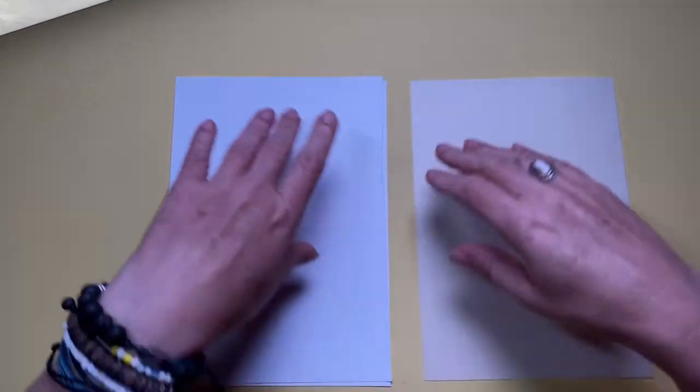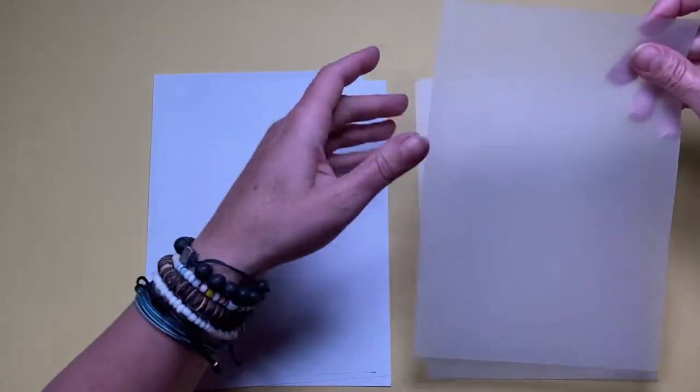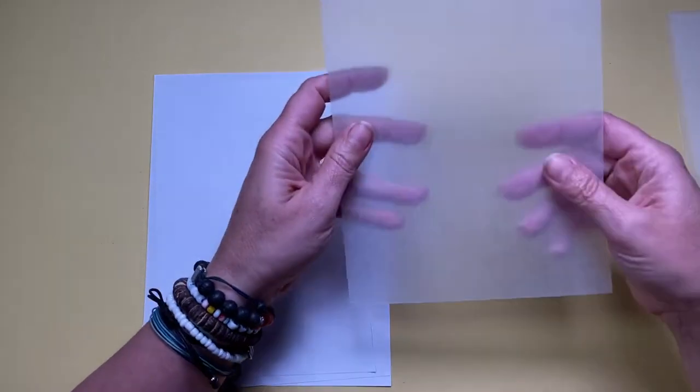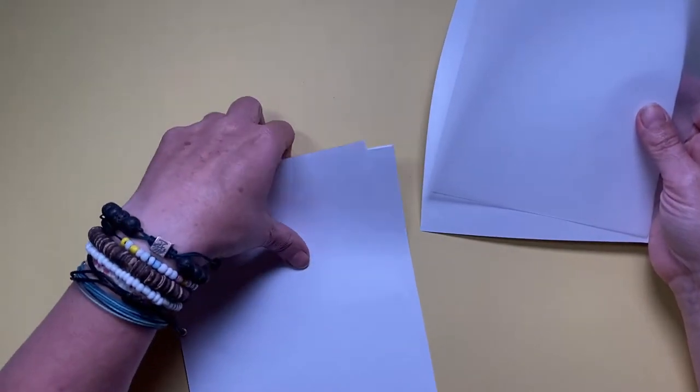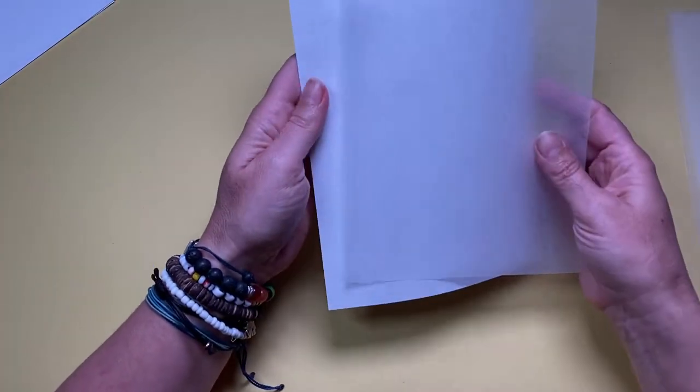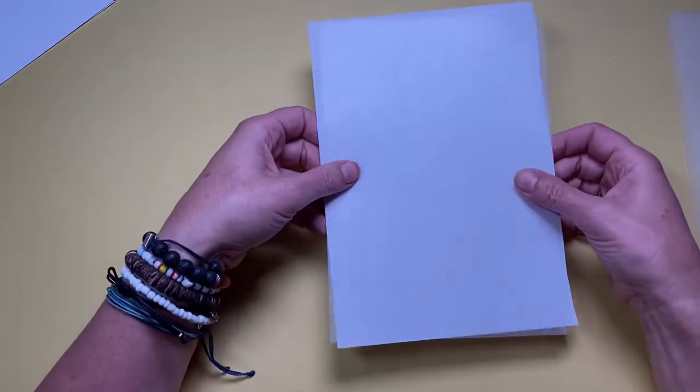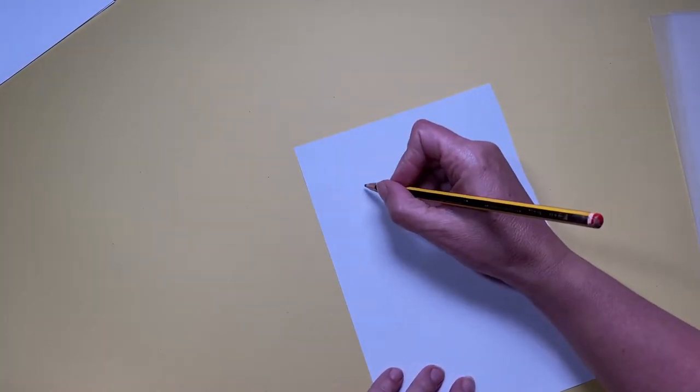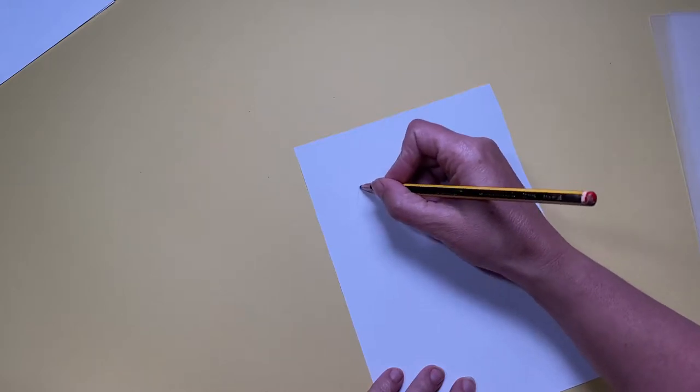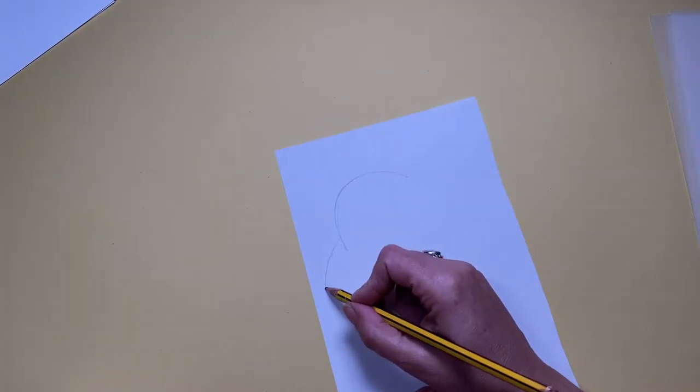The shrink plastic sheets I've got are A5 size, so I've cut some A4 paper in half to use as my templates. What I'm going to do is draw the design onto the paper and then trace it out onto the shrink plastic with my Posca paint pens.